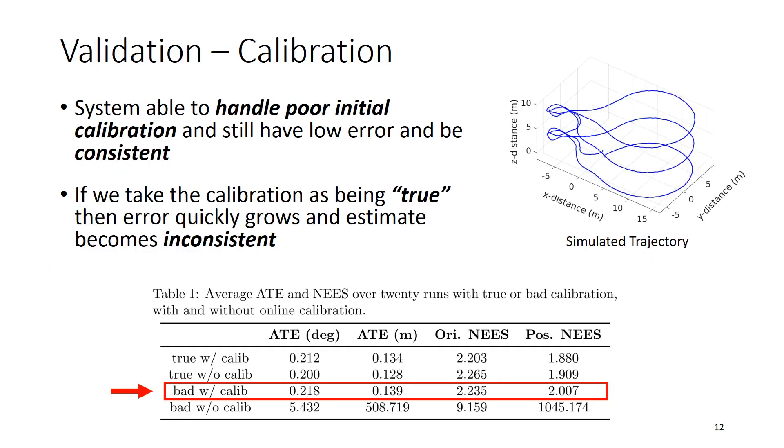Looking at some actual simulation results, we verified our ability to perform online calibration and what we found is that we're able to handle very poor initial calibration and still have low error while being consistent. If you take a look at this table in the third row, we're able to start with very bad calibration and achieve the same level of ATE error as if we started with the true calibration. The important part there is that we're not inconsistent. If we didn't perform this online calibration, our error would be very large and our estimator would become very overconfident.